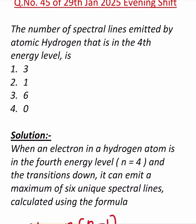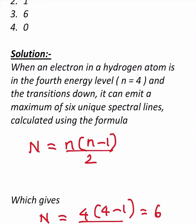We need to find one from those options. Here is the solution. When an electron in a hydrogen atom is in the fourth energy level, that is n equals 4, and the transitions down, it can emit a maximum of six unique spectral lines.